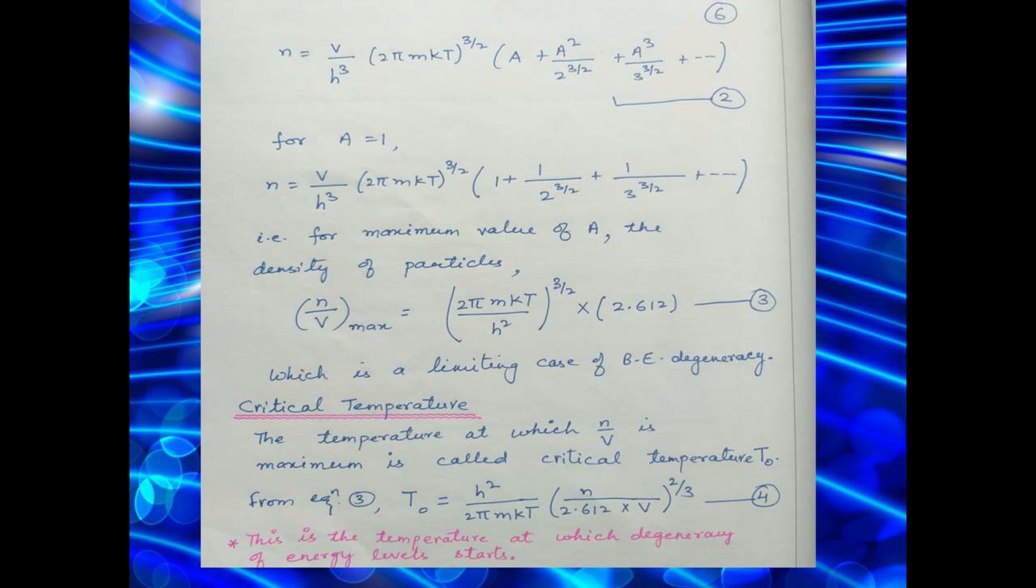Now we define the critical temperature. The temperature at which N by V is maximum is called critical temperature T0. From equation 3, we can derive the expression for T0, and it is H square by 2 pi Mk multiplied by N over 2.612 into V raised to power 2 by 3. This is the temperature at which degeneracy of energy levels starts.